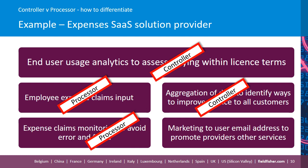Finally, if we look to the bottom right-hand corner, there's a final use of the data: the provider is using the email addresses within the solution to send the employees marketing and promote their goods and services. Again, this is a provider purpose — this is not done on behalf of the customer. This is what the provider wants to do to promote their own goods and services. So in this case, the provider is the controller.